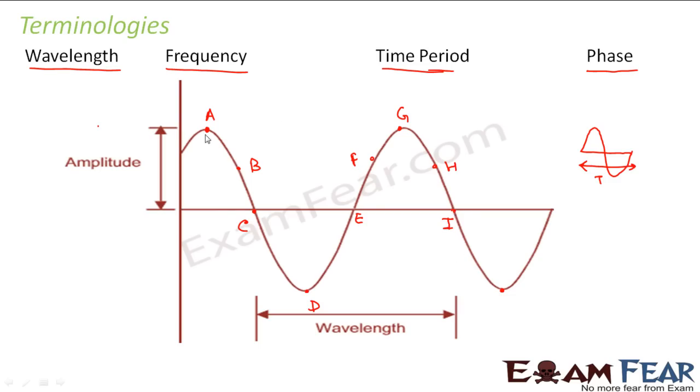So when I talk of phase, if you look at this point A and point G, both of them are in the same phase because point A is at the topmost position, thereafter it is coming down. Similarly, point G is also at the topmost position thereafter it is coming down. So these two points are in phase. But if you look at point A and point B, they are not in phase - they are two different locations under two different situations. Whereas if you look at point B and point H, they are again in phase. Now if you look at B and F, B and F are not in phase.